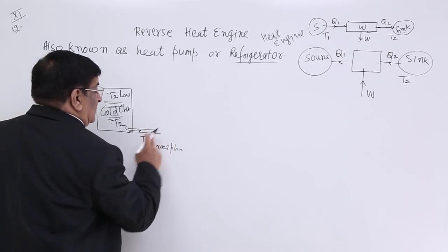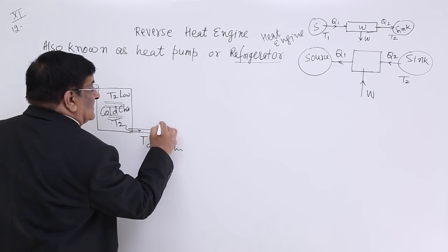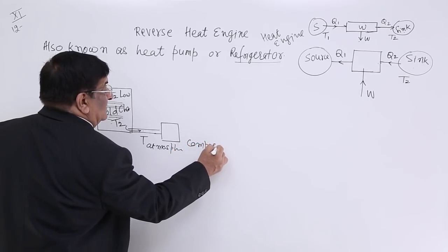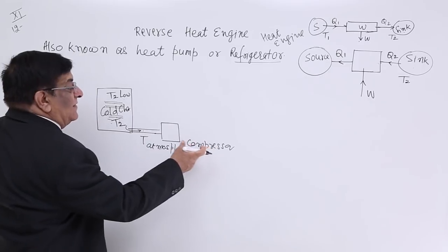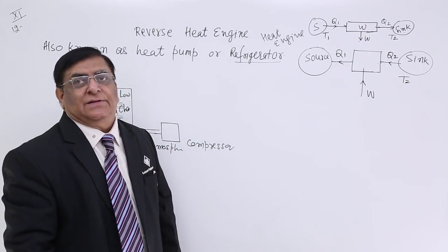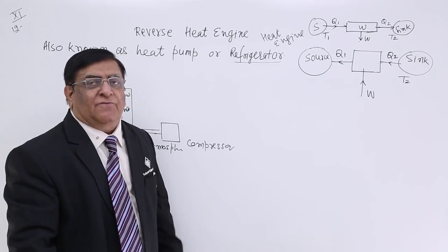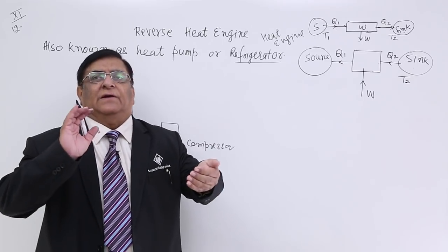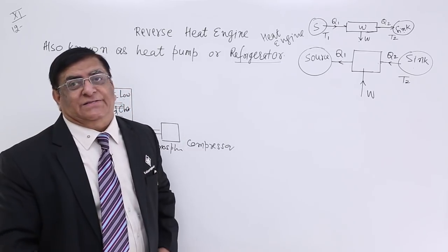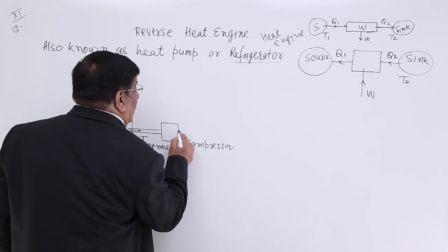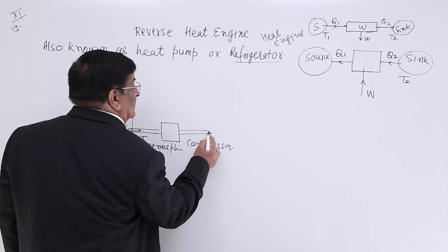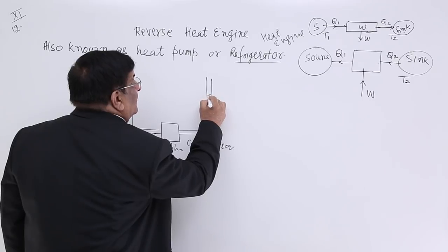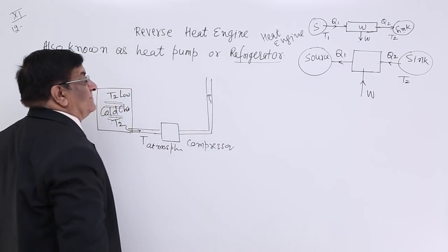This gas at temperature T is passed through a pump called a compressor. When we compress the gas, the volume decreases — this is an adiabatic process. When it is compressed suddenly, the temperature rises to a very high temperature T1.